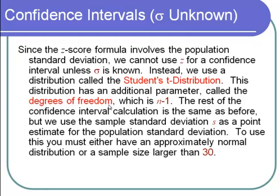Everything else looks exactly the same. The t distribution, although not normal, is not far off — it's mound-shaped, unimodal, and symmetric, but a little taller at the ends. To use the Student's t distribution, either you know your population is normally distributed, or you have a sample size larger than 30. Usually you can get a large enough sample. If those conditions are met, you can use the t distribution.